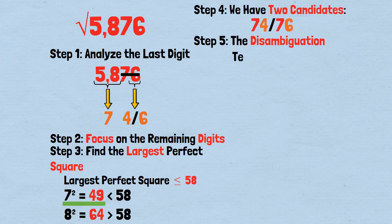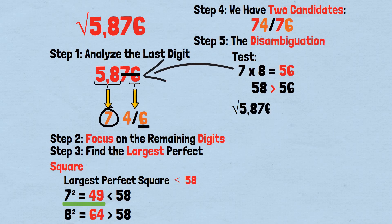Step 5: The disambiguation test. Multiply the first digit, 7, by the next consecutive integer, 8. 7 times 8 equals 56. Compare this with our remaining digits, 58. Since 58 is greater than 56, we choose the larger ending digit, 6. Therefore, the square root of 5,876 is 76. Verification: 76 squared equals 76 times 76 equals 5,876. Absolutely correct.